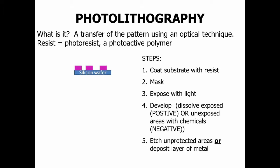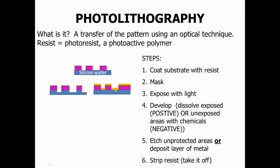Then you can etch the unprotected areas after removing your mask, or you can deposit a layer of metal. For example, you can etch into the surface of silicon, or plate it with a thin layer of gold. When you complete the last step — stripping the resist, the pink chemical that's left over — you're left with your final product.